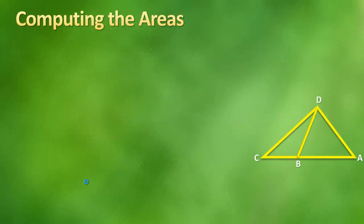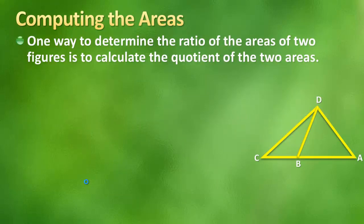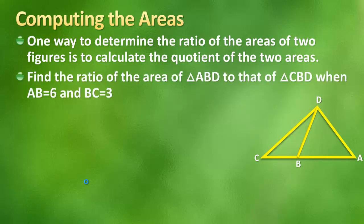Let's start with computing the areas. You can determine the ratio of areas of two figures by calculating the quotient or just setting it up as a fraction is what that means. Just remember quotient means division, so any time you hear that it's going to mean you're setting it up as a fraction. So let's say we had to find the ratio of the area of triangle ABD to that of CBD. AB is 6 and BC is 3.